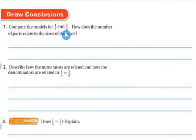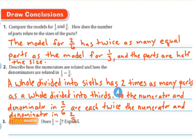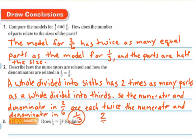Draw conclusions. Compare the models for one-third and two-sixths. How does the number of parts relate to the size of the parts? The model for two-sixths has twice as many equal parts as the model for one-third, and the parts are also half the size. Number two: describe how the numerators and denominators are related in one-third and two-sixths. A whole divided into sixths has two times as many parts as a whole divided into thirds. So the numerator and denominator in two-sixths are each twice the numerator and denominator in one-third — two times one is two, and two times three is six.